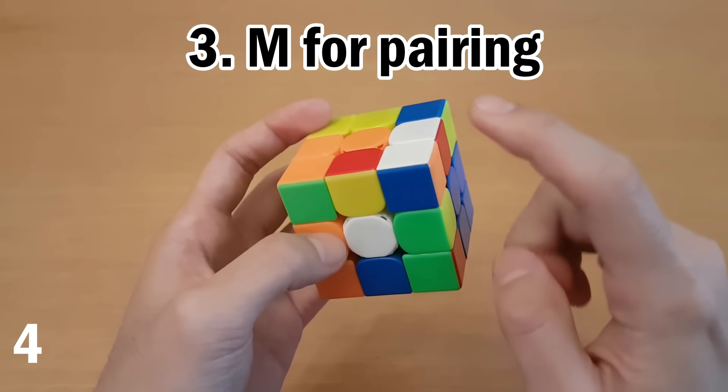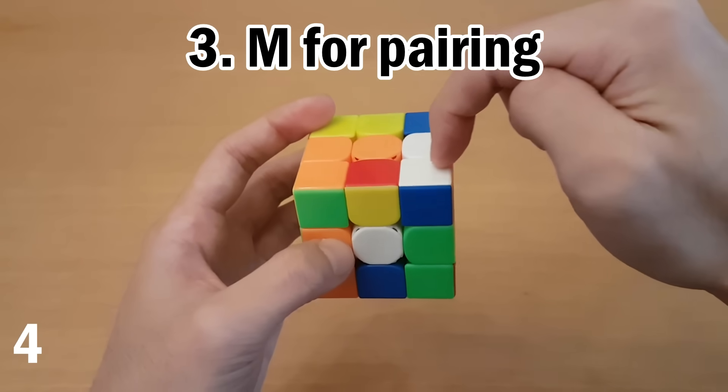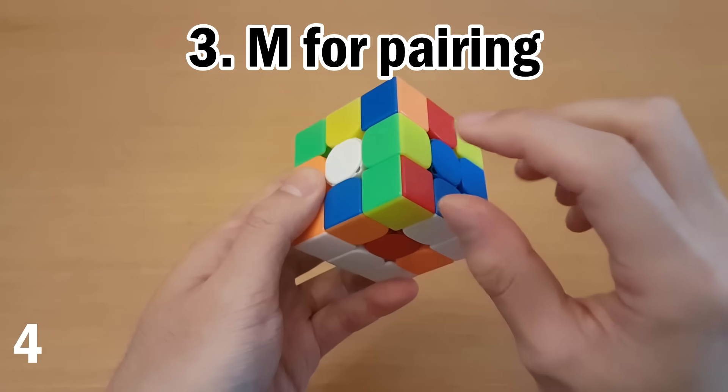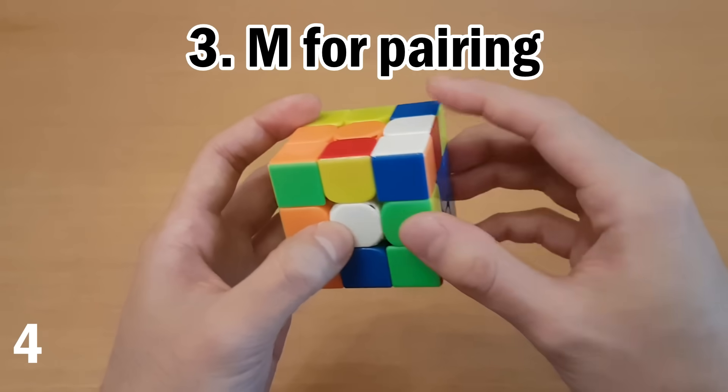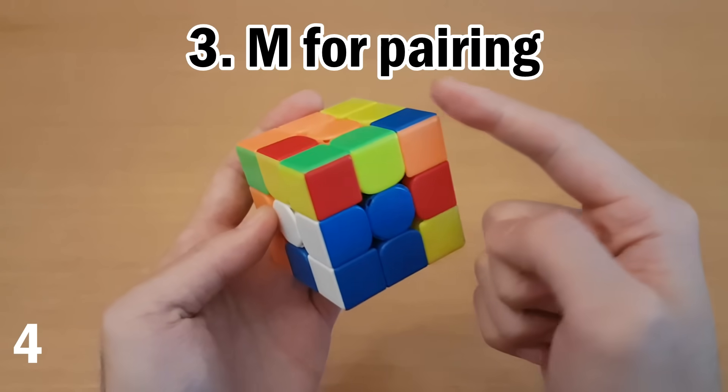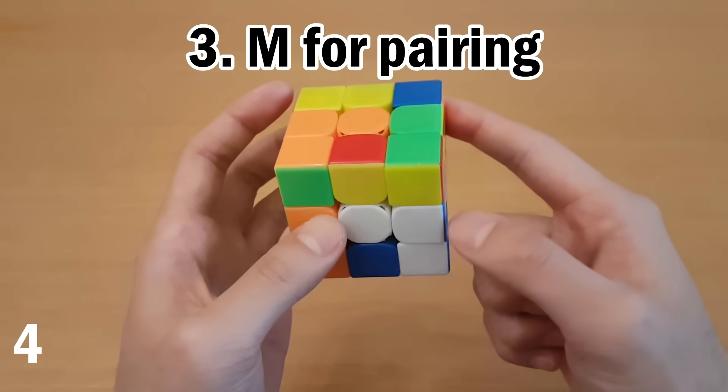Now, here's a similar case, and this time we see that the corner is not oriented correctly. We have white on top. In this case, if it's a front slot, just hold it above the slot and do that. And then this will turn it into a white on the side.